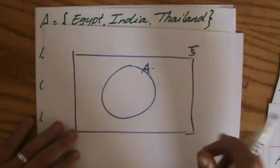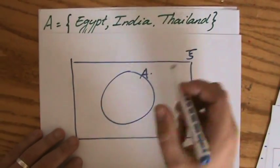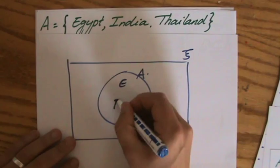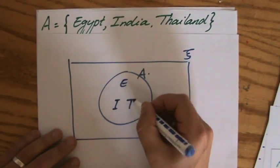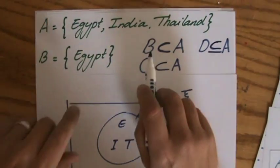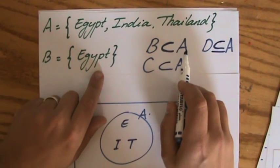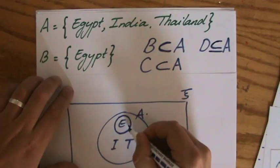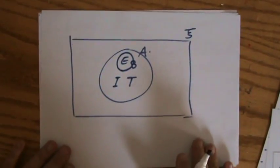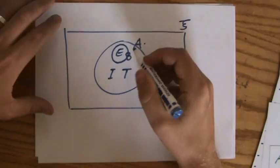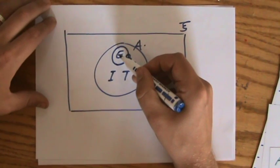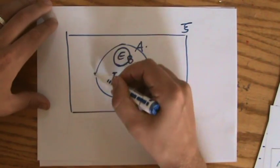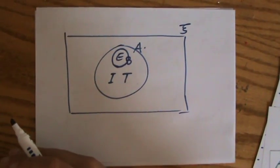Very quickly, let's say I have set A and it has the countries Egypt, India and Thailand in them. Now, why is B a subset of A? Because the entire set B lies inside set A. Because B only consists of the country Egypt, the entire set lies inside A. And therefore we call it a proper subset.